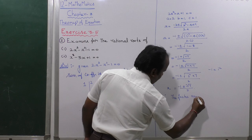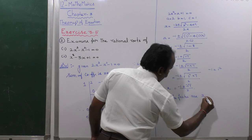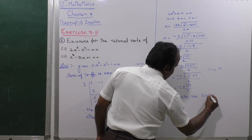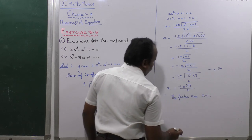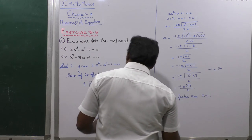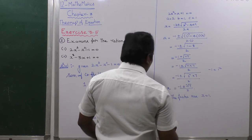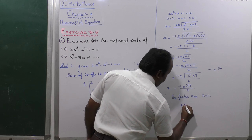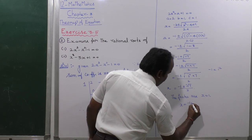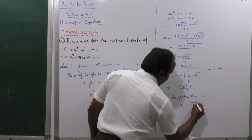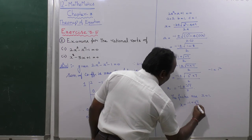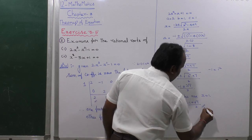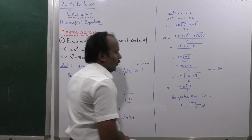Therefore the factors are: the first factor gives x equals 1, and the second factor gives x equals (minus 1 plus i√7) divided by 2.